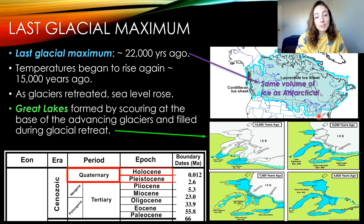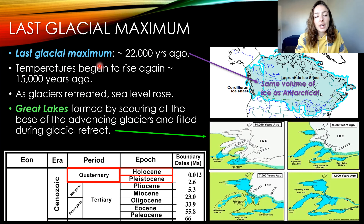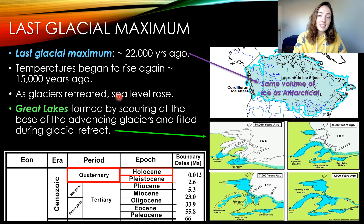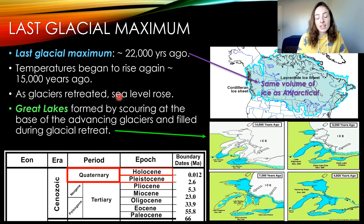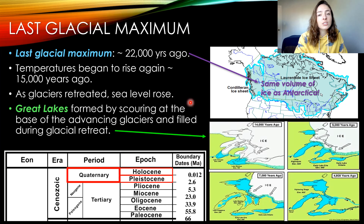Moving into the Holocene, we see that the last glacial period, or the last glacial maximum, was around 22,000 years ago, and temperatures began to rise after that around 15,000 years ago. As these glaciers retreated, sea level rose because high melting means more water, and that water has to go somewhere. We'll talk a lot more about how much sea level rose when we get to sea level change from the Pleistocene to the Holocene, which was insane.